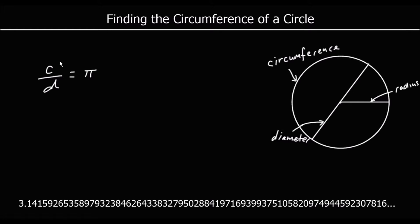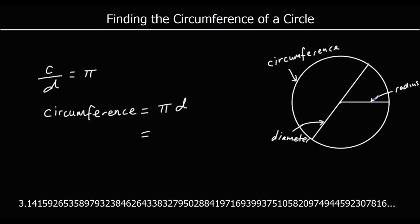Pi is the number you get if you divide the circumference of a circle by its diameter. Rearranging by multiplying both sides by the diameter, the circumference equals pi times the diameter (C = πd). Since a diameter is two radii, we can also write C = 2πr. Both formulas are equivalent.